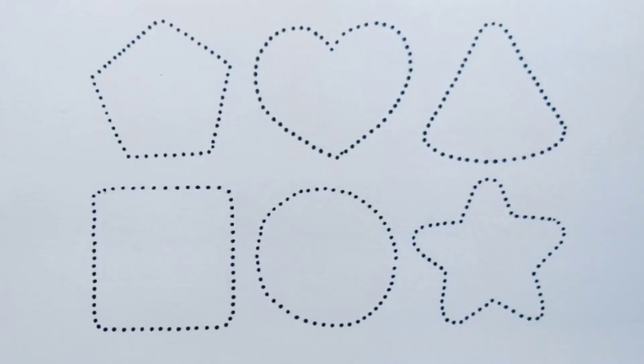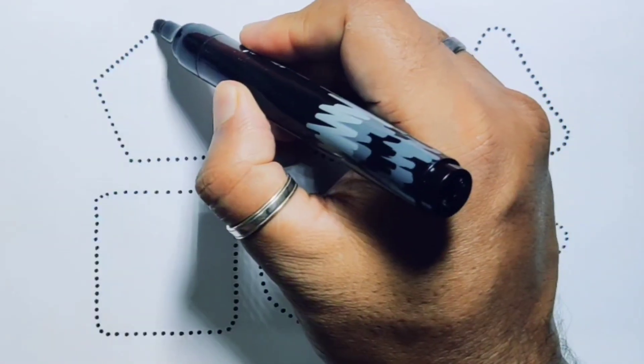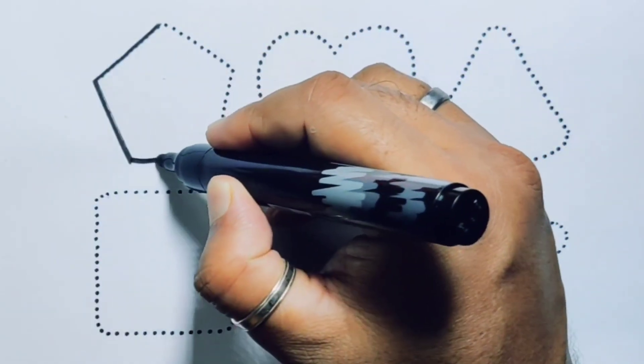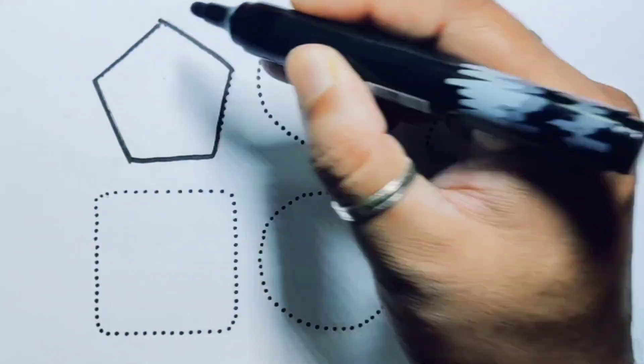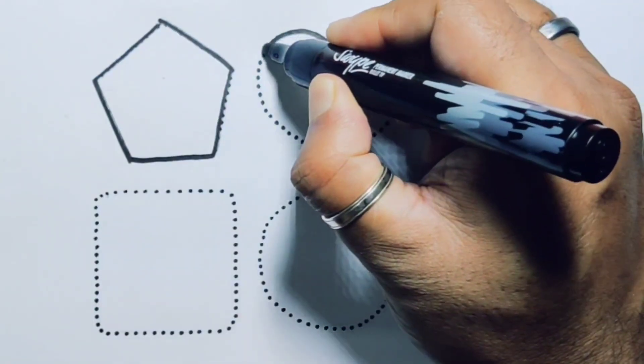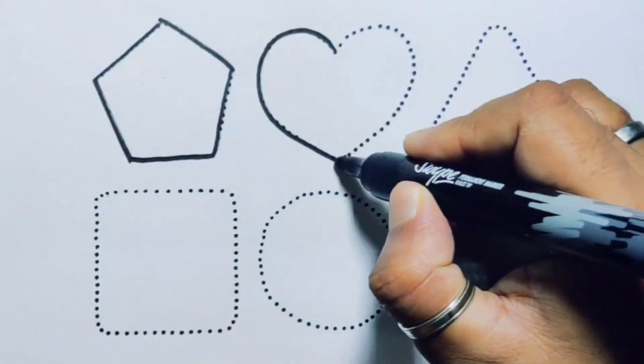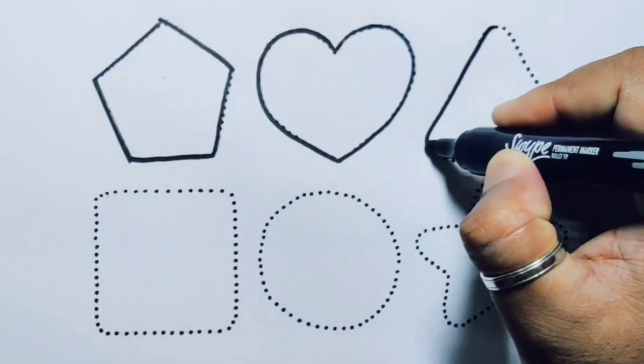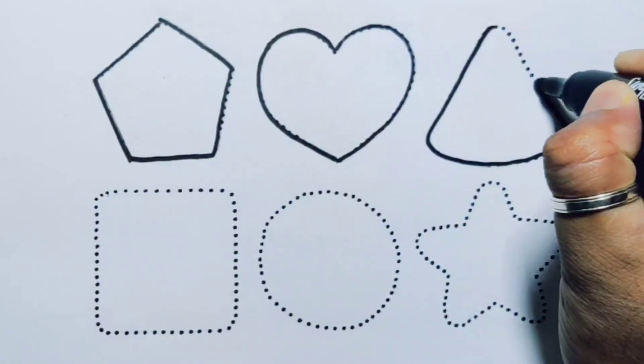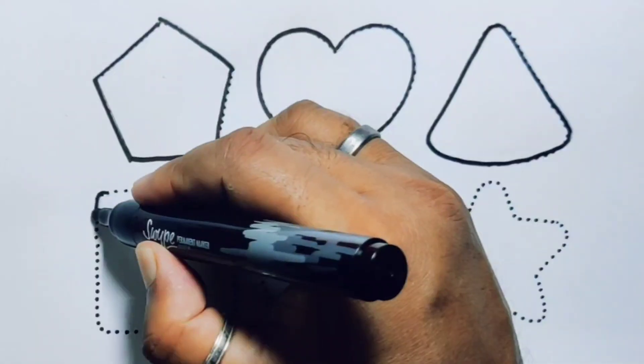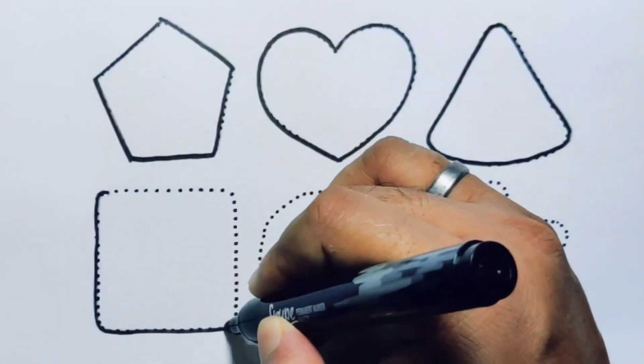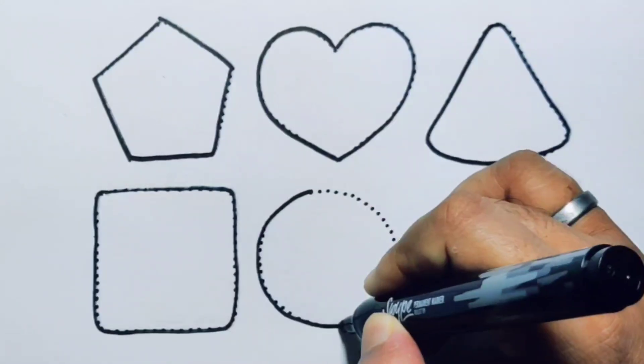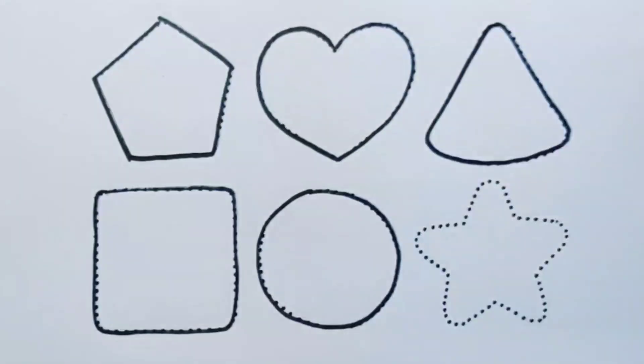First we're going to draw the shapes: pentagon, heart, triangle, square, circle, and star.